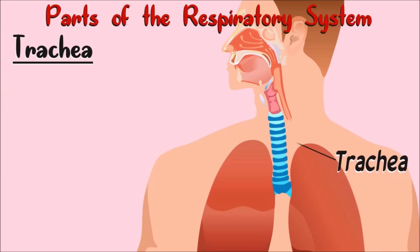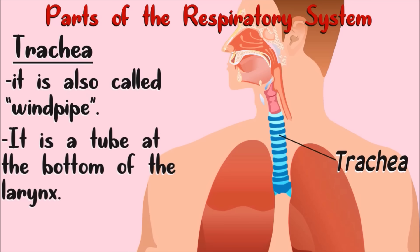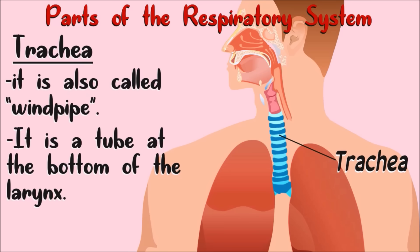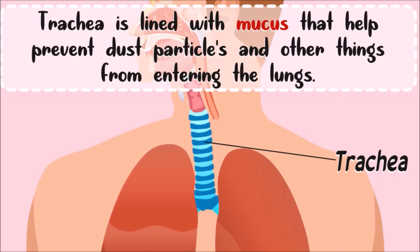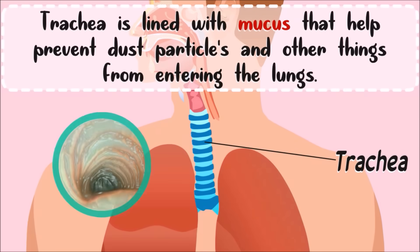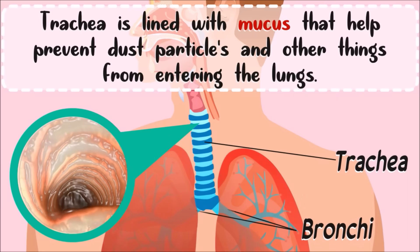This is the trachea — it is also called the windpipe. It is a tube at the bottom of the larynx. The trachea is lined with mucus that helps prevent dust particles and other things from entering the lungs. The trachea is connected to the lungs through the bronchi, or bronchial tubes.